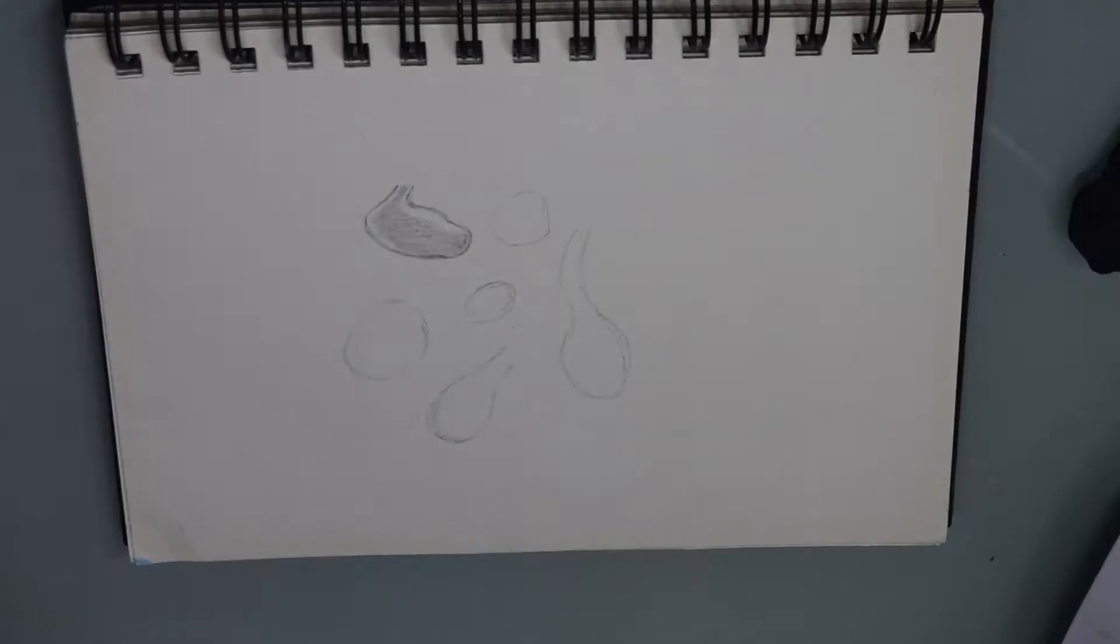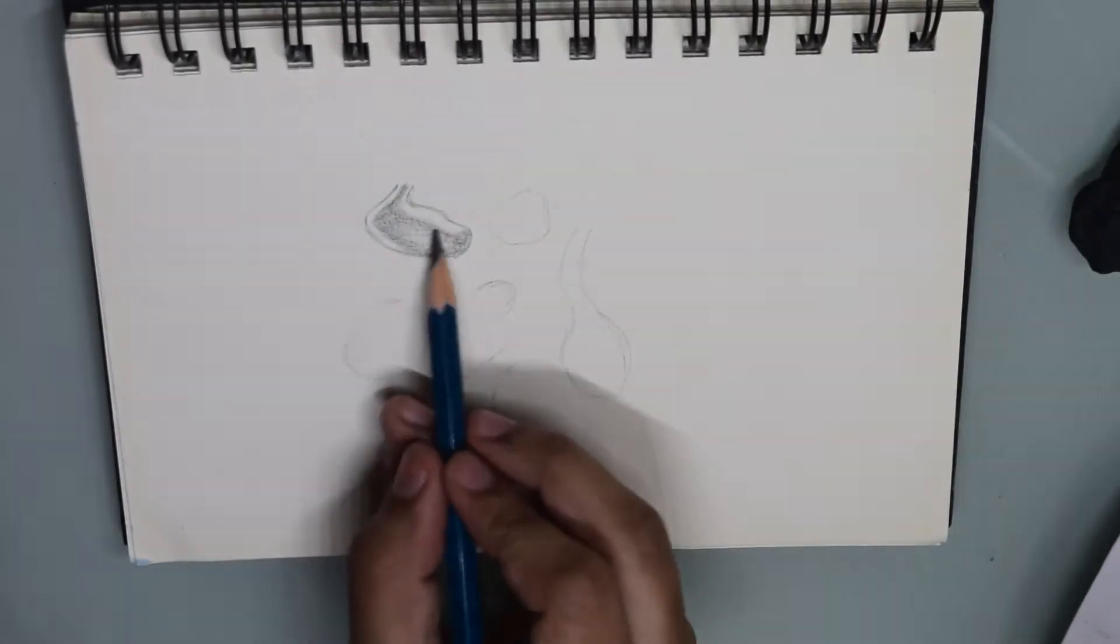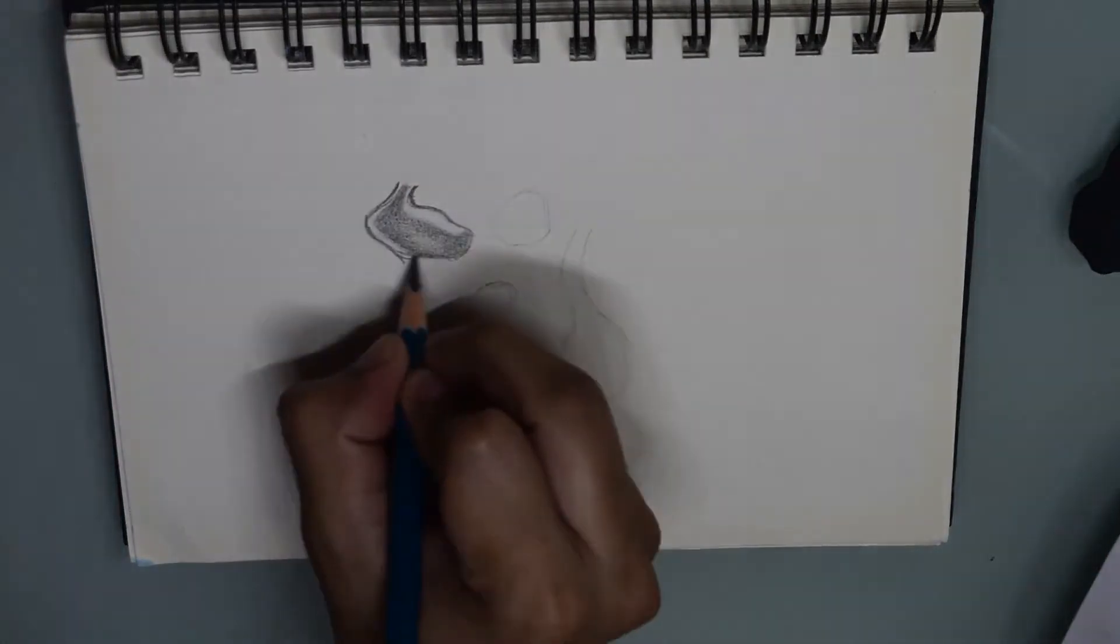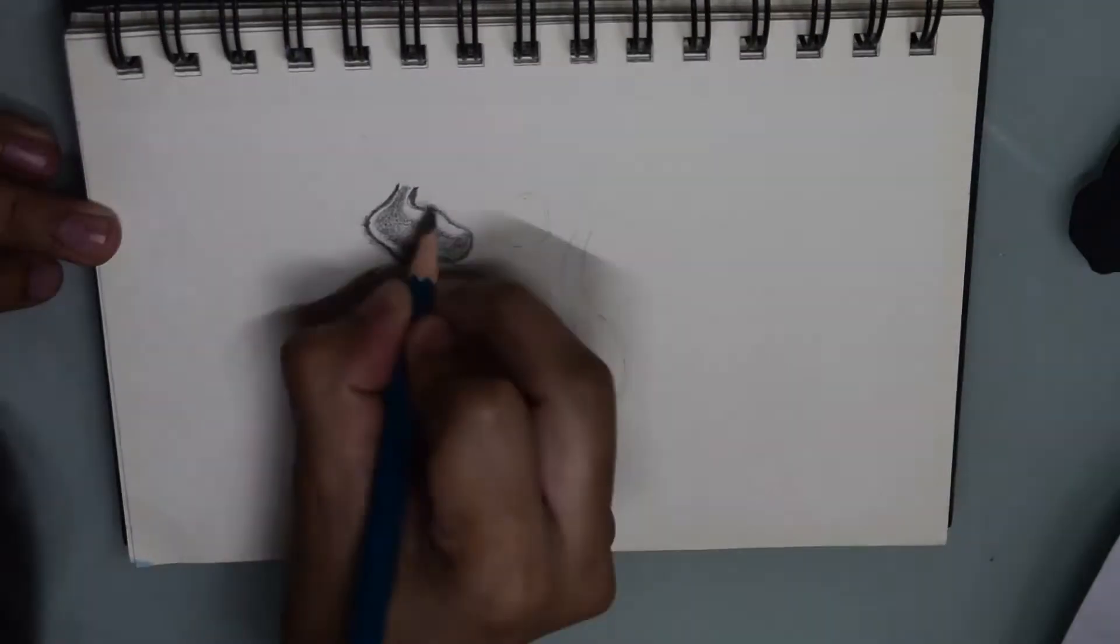Hello everyone and thanks for joining me on sketchbook episode 10. Today's episode is on how to draw a water drop on white paper with graphite pencils.